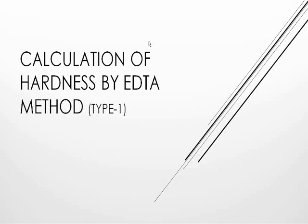Hi, welcome to lecture 4 of the module Water. I am Oudhumbar Patkar. In the last lecture we learned how to determine hardness of water using the complexometric titration method. Now in this lecture I will show you how to calculate total, permanent and temporary hardness of water using this method. Let's solve some numericals.